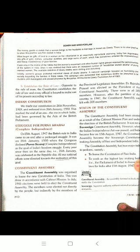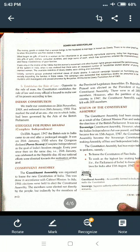The Constituent Assembly had two major tasks to perform. First, to frame the constitution of free India. Second, to work as the highest law-making body — that is, Parliament of India — to frame new laws for India after 15 August 1947. Parliament of India as the highest law-making body jo kya karti hai hamare desh ke liye kanoon banati hai. Yeh do kaam the Constituent Assembly ke paas.